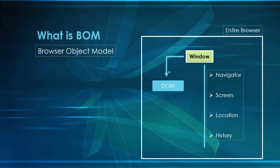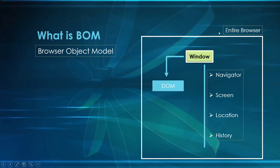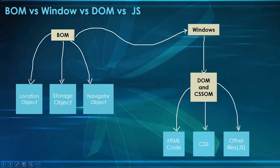In our previous session we have already seen — this is our entire browser. Browser represents Internet Explorer, Chrome, Firefox, Opera, Safari, all those things. Inside that we have this window object, then we have this document object. So Browser Object Model will be providing many objects which are accessed by Windows. BOM will be giving access to the window object which is king to our entire web page.